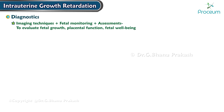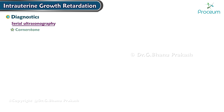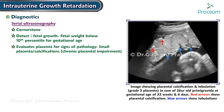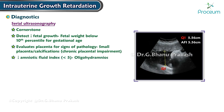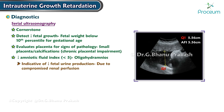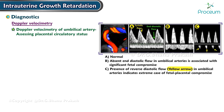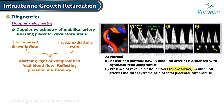Diagnosing intrauterine growth restriction involves imaging, fetal monitoring, and assessments of fetal growth, placental function, and fetal well-being. The cornerstone is serial ultrasonography, which can detect fetal weight below the 10th percentile and evaluate the placenta for pathology such as small size or calcifications. A reduced amniotic fluid index less than five suggests oligohydramnios, indicating decreased fetal urine production due to compromised renal perfusion. Doppler velocimetry of the umbilical artery assesses placental circulatory status; reduced or reversed diastolic flow and an increased systolic-diastolic ratio are alarming signs of placental insufficiency.